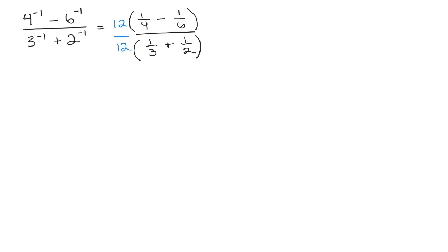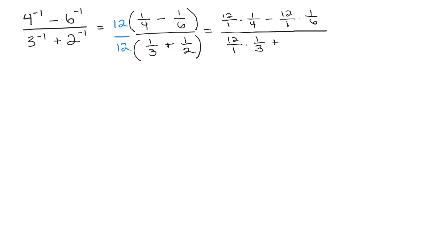We need to apply the distributive property for that twelve. Writing it as twelve over one: twelve over one times one-fourth, minus twelve over one times one-sixth, all over twelve over one times one-third, plus twelve over one times one-half. Using order of operations, we do the multiplication before subtraction in the numerator, and now we're going to be able to cancel. The denominator will always go into the least common multiple we multiply by, because we chose a multiple of each denominator.